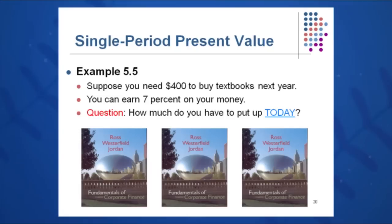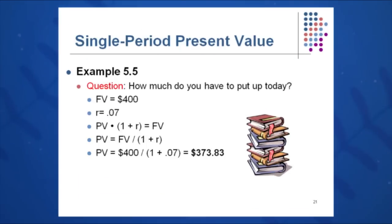There are a lot of very practical uses of this equation. For example: how much do I need to invest today if I need $400 to buy books next semester and I can earn 7% over the course of a year? I know I need $400 next year. PV equals FV divided by 1 plus R to the T: 400 divided by 1.07, giving an answer of $373.83. I need to put that amount into the bank today at 7% to get $400 by the end of next year.